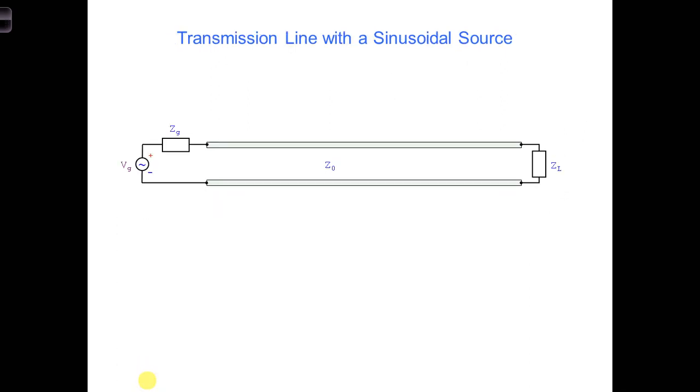So here I've redrawn the transmission line to have a source that changes with time. To keep things simple, let's choose the simplest waveform we can imagine that has time variation, a sinusoid.